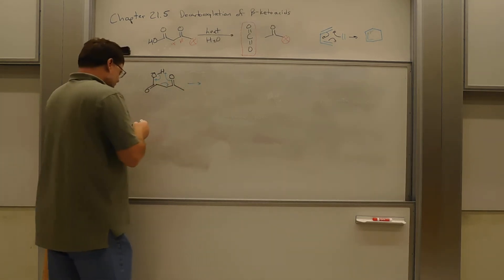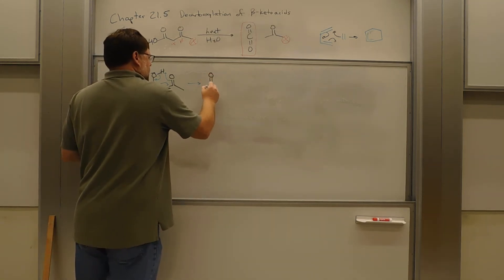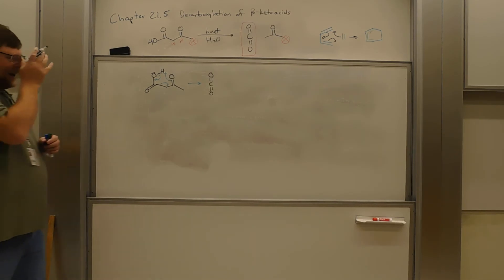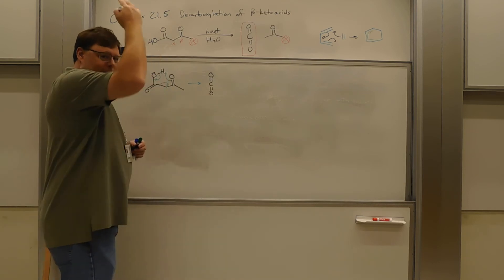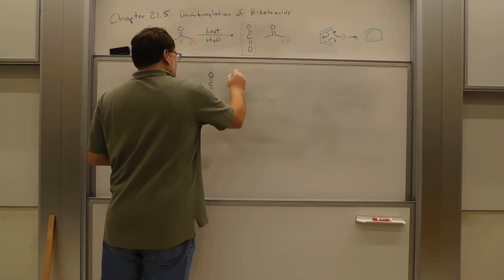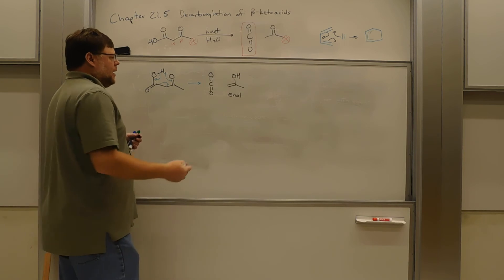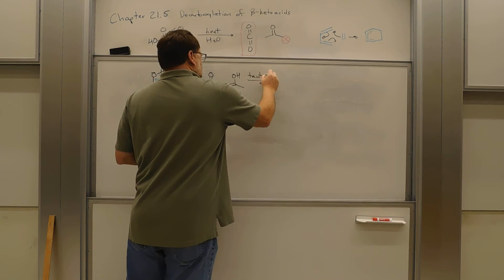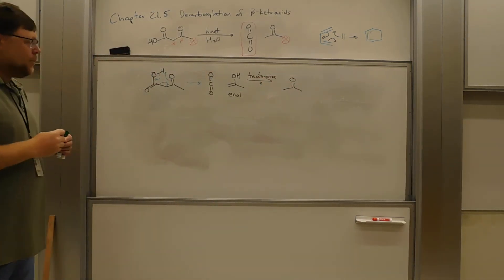And the products that you get out of this, well, you get your CO2 directly. And that's what drives this reaction. What's driving this reaction is that CO2 forms and just bubbles up out of your reaction flask. And then the other thing you get is an enol. And then this tautomerizes to the carbonyl.